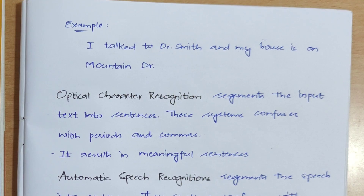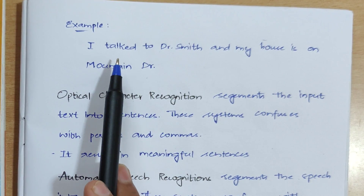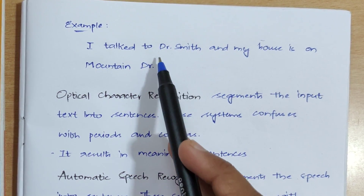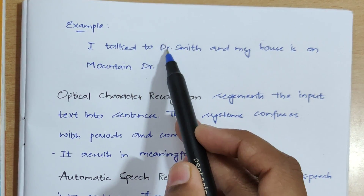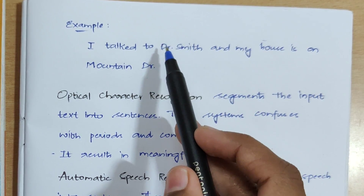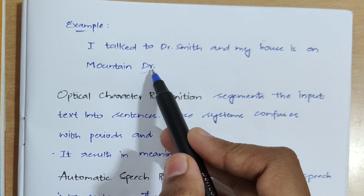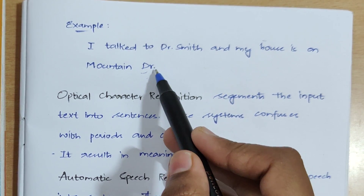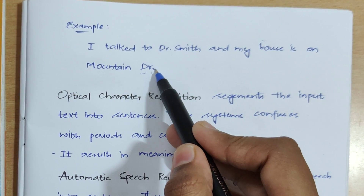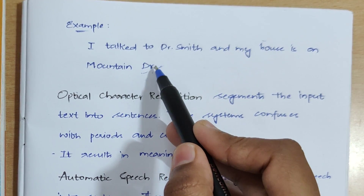For example, take the sentence: 'I talked to Dr. Smith and my house is on Mountain Dr.' Here, the first 'Dr.' ends with a full stop but doesn't mean the sentence is ending. The second 'Dr.' at the end is where the sentence actually ends. The system should detect that the sentence boundary is at the second full stop, not the first.